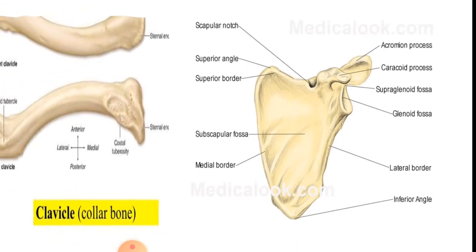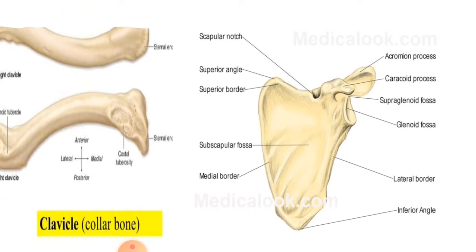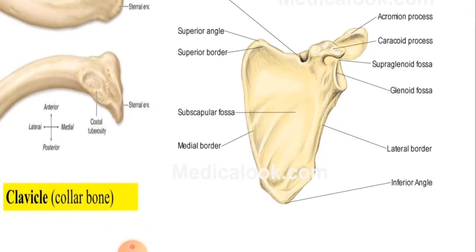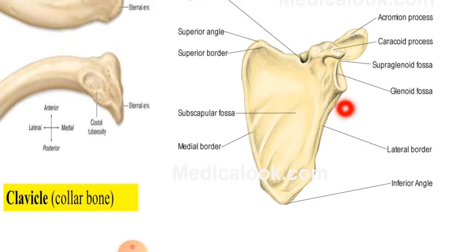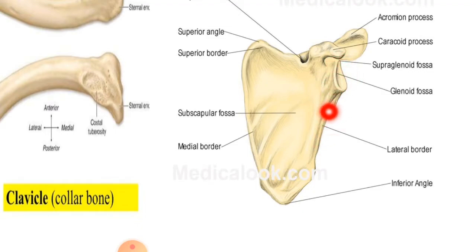Now we will talk about the scapula. Just like the clavicle, the scapula also has a lateral border and a medial border. The lateral border is where the glenoid fossa is located, which we will discuss later. The medial border is more towards the medial side of the body.